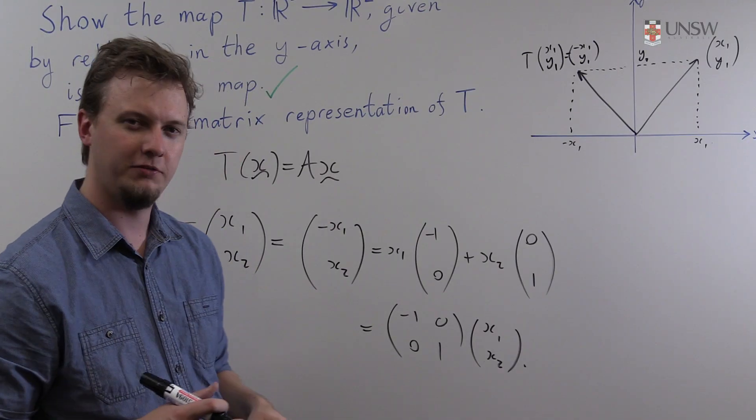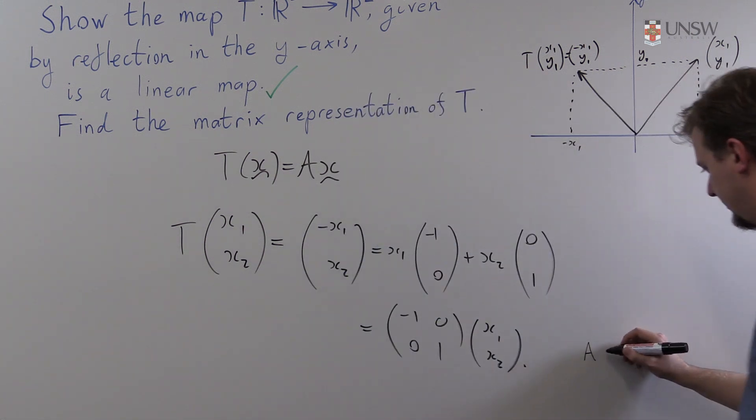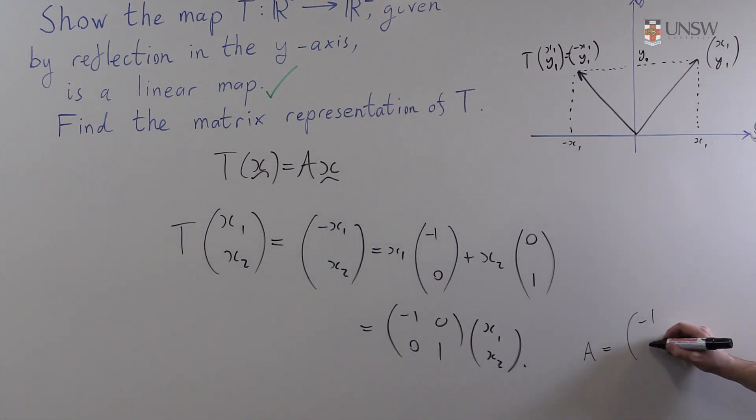So we can immediately read off our matrix representation for T. It's the matrix A equal to [−1, 0; 0, 1].